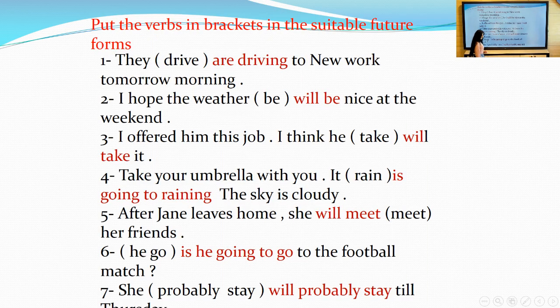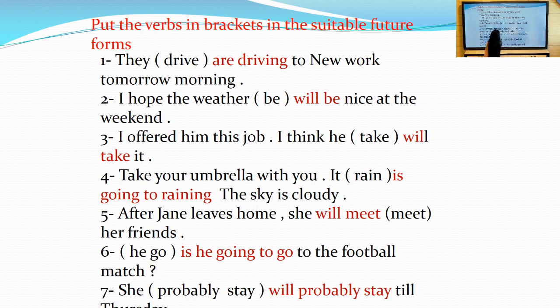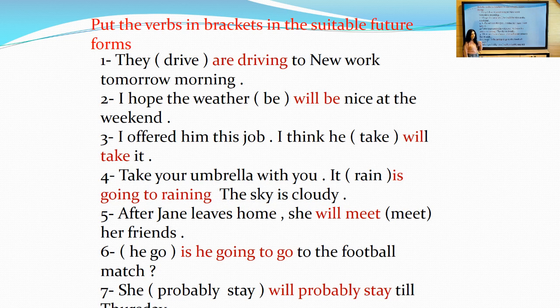We have some sentences to put these verbs in the correct form. Put the verbs in brackets in the suitable or correct future forms. They drive to New York tomorrow morning. We have tomorrow morning. Something about plans or arrangements. So I will use present continuous: are driving.